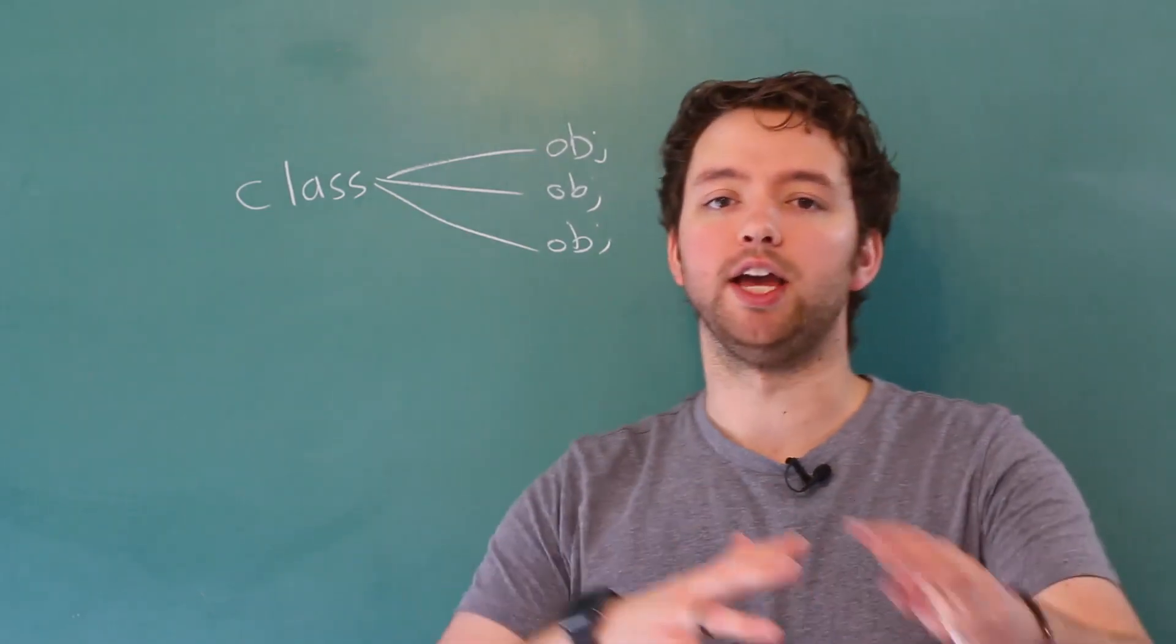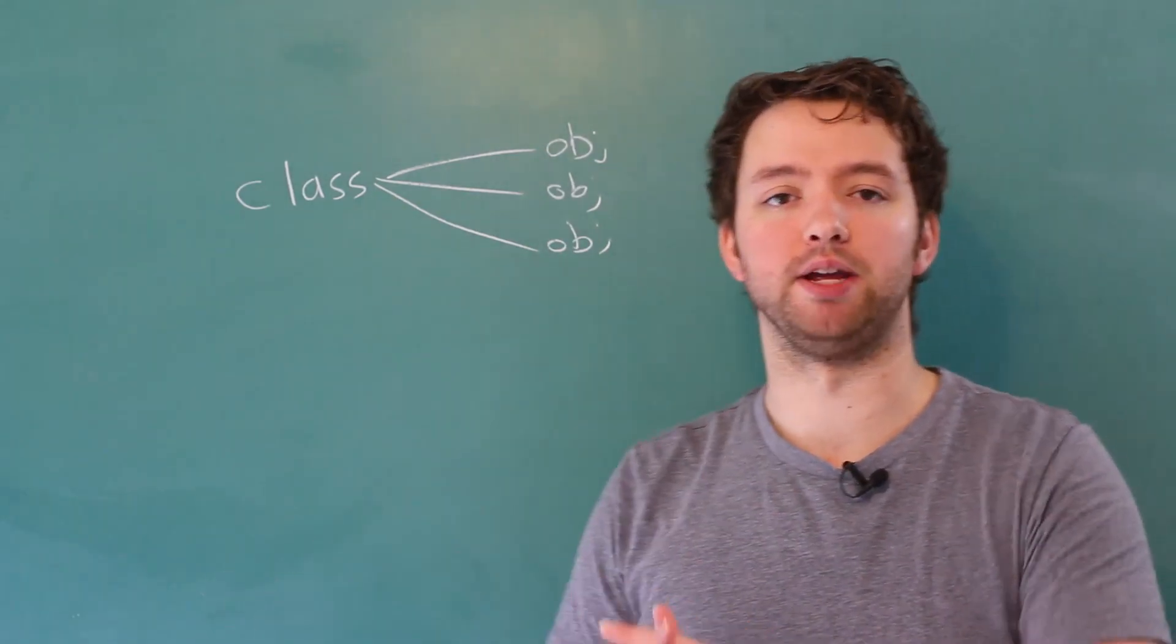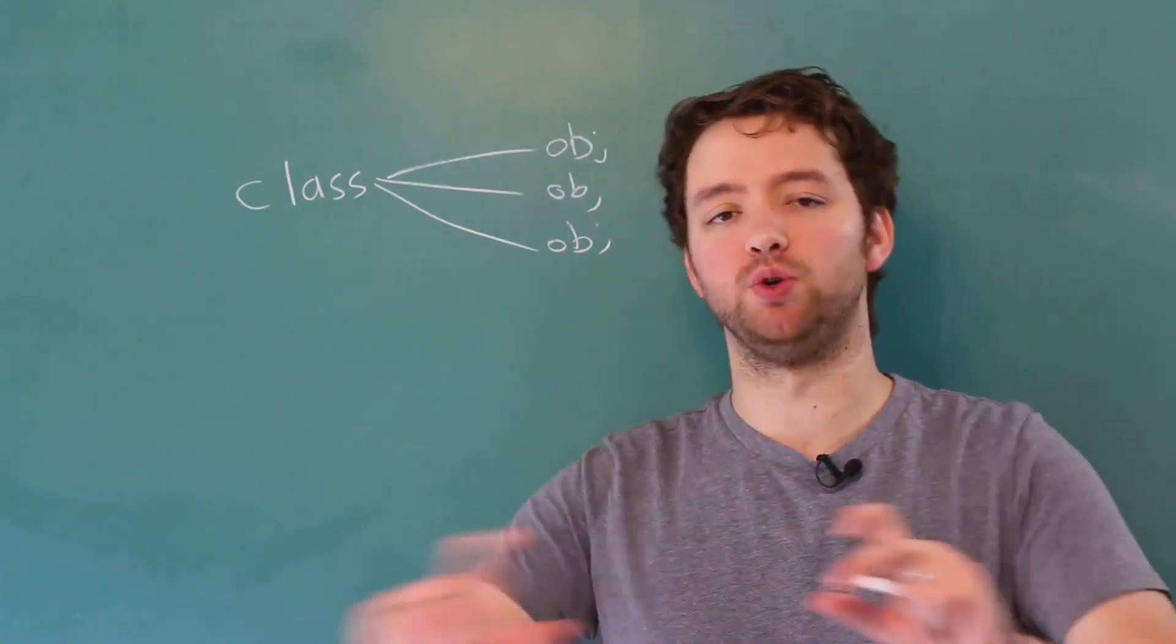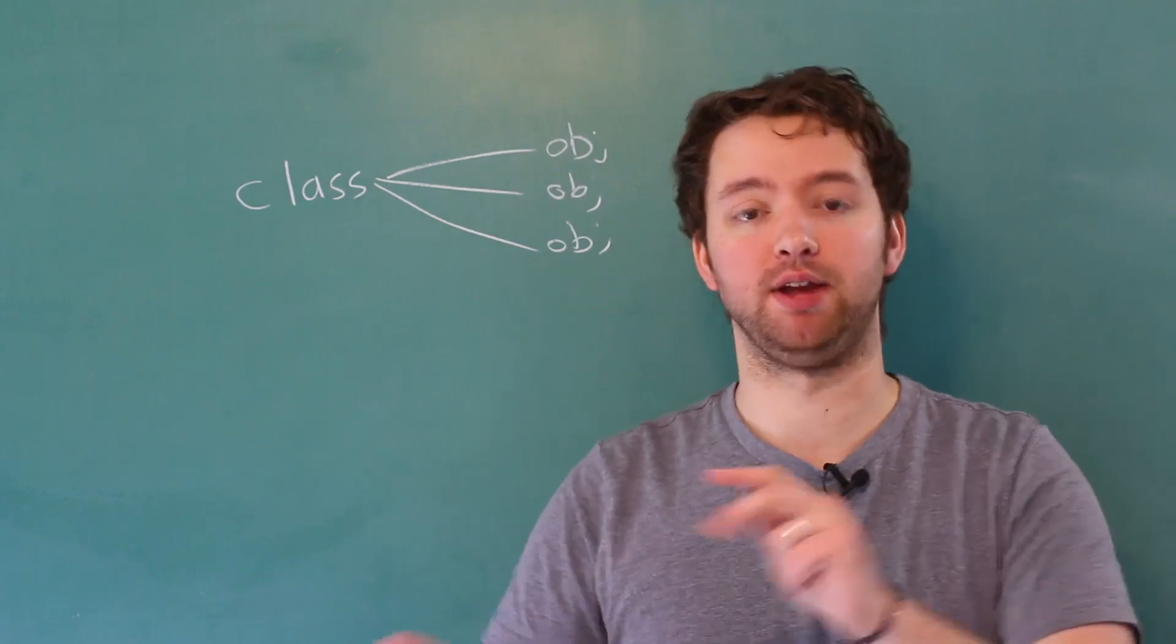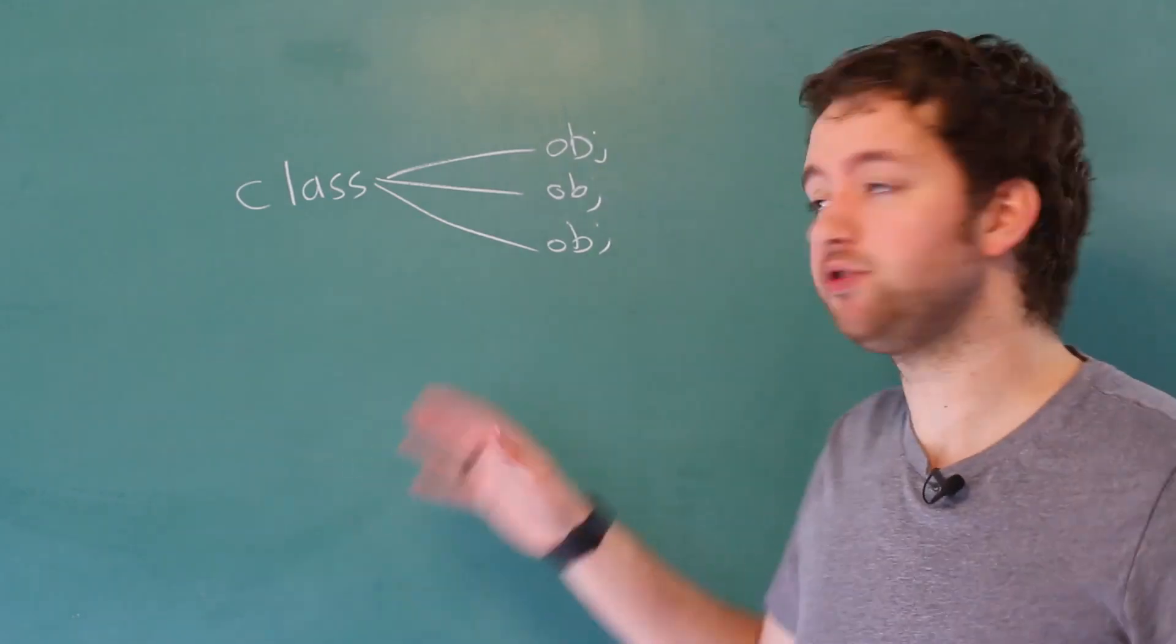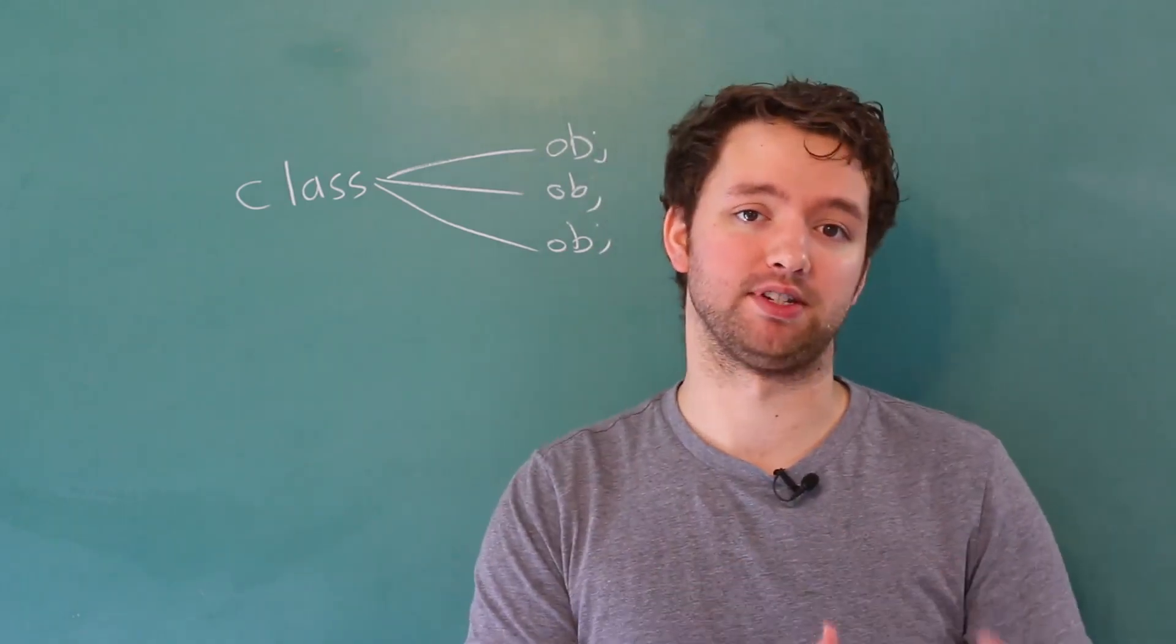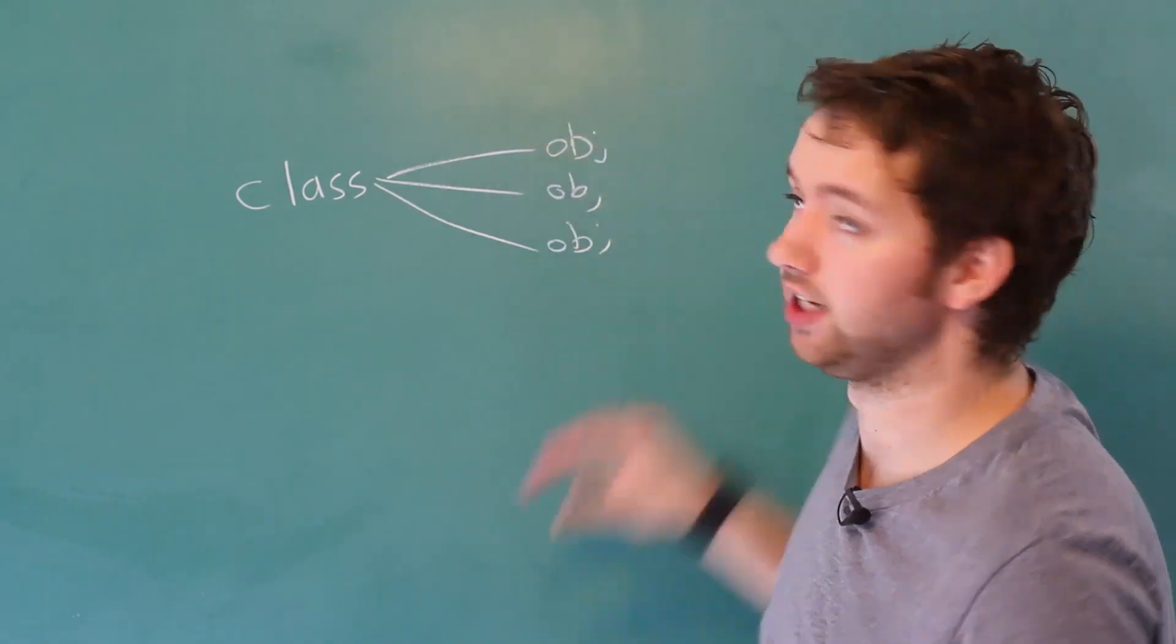For example you might have a User class and one of these methods might be talk, which would basically do an output saying the person's name and their information or something like that. An instance method is kind of the opposite of a static method because it's attached to the instances.